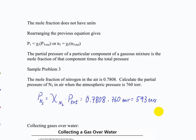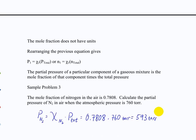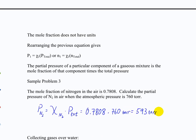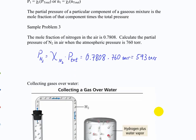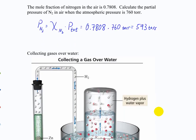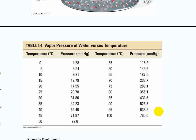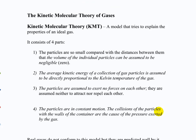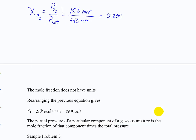You only have to worry about unit conversion when you're dealing with R, because you need the R units to cancel out. The only unit you always need to convert for all these calculations is temperature — it always needs to be in Kelvin because it's an additive conversion. Other units, you just have to keep consistent. Next time we'll talk about how this applies to collecting gases over water, and then we'll move on to the kinetic molecular theory.